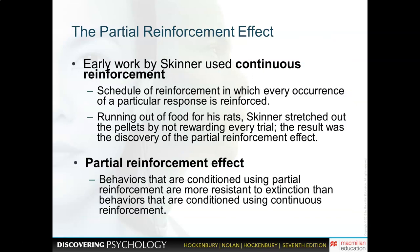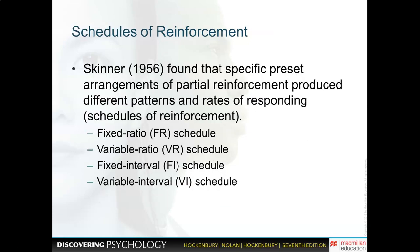Reinforcement doesn't always happen on a continuous basis. Continuous reinforcement means a reinforcer is delivered every single time a desirable response occurs. Partial reinforcement refers to reinforcement occurring only once in a while — not every single time the desired behavior is demonstrated. There are four types of reinforcement schedules: Fixed Ratio, Variable Ratio, Fixed Interval, and Variable Interval.